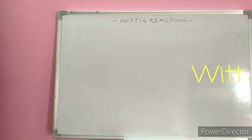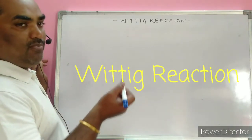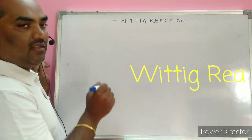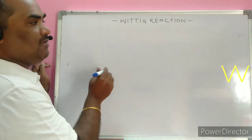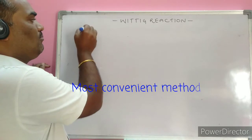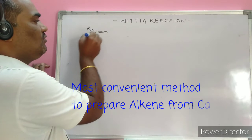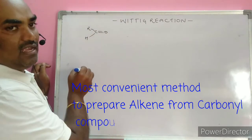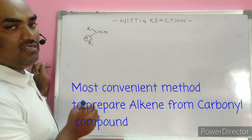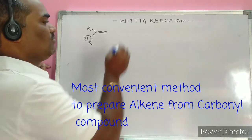Hello friends, welcome to my YouTube channel. Today's question is the Wittig reaction — a very important method for the preparation of alkenes. The carbonyl compound involved may be an aldehyde or a ketone. If represented by H, we call it an aldehyde; if represented by R, we call it a ketone. This is simply called a carbonyl compound.